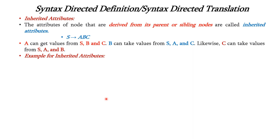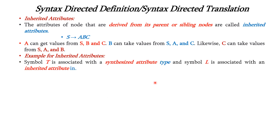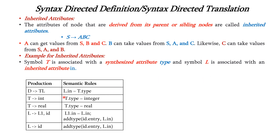Let us see an example for inherited attributes. The symbol T is associated with a synthesized attribute called type and L is associated with an inherited attribute called in. We have the productions: D tends to TL, T tends to int, T tends to real, L tends to L1 comma id, and L tends to id. Here D is the declaration, T is the synthesized attribute called type, and L is the inherited attribute representing a variable. According to the semantic rules, L dot in equals T dot type — meaning L inherits the data type T.